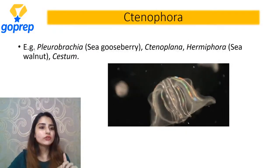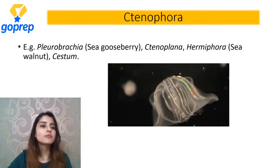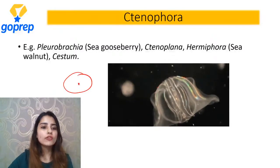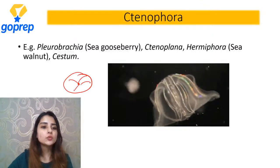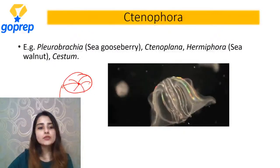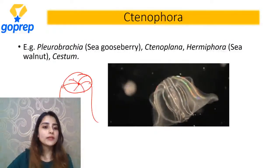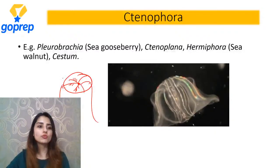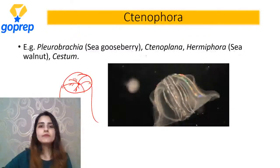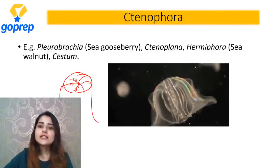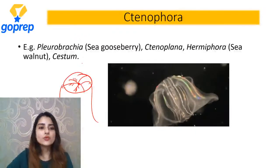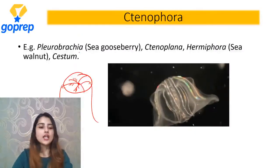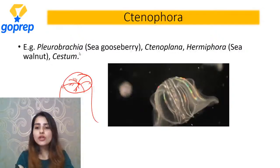Examples of Ctenophora - first one is Pleurobrachia - oval body, eight median comb plates, two tentacles, cilia for locomotion. That is the sea gooseberry. Another is Ctenoplana. Next one is Hormiphora and the last one is Cestum. Ye kya hain - examples hain Ctenophora ke. Yahaan se hamara Ctenophora is over.